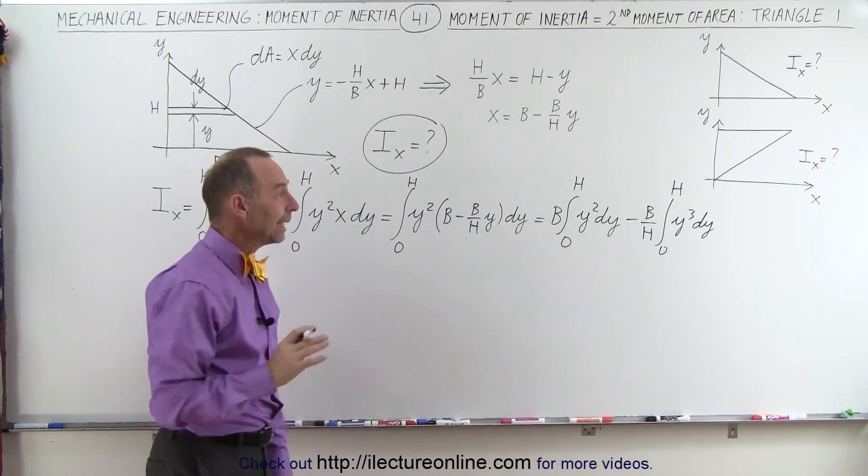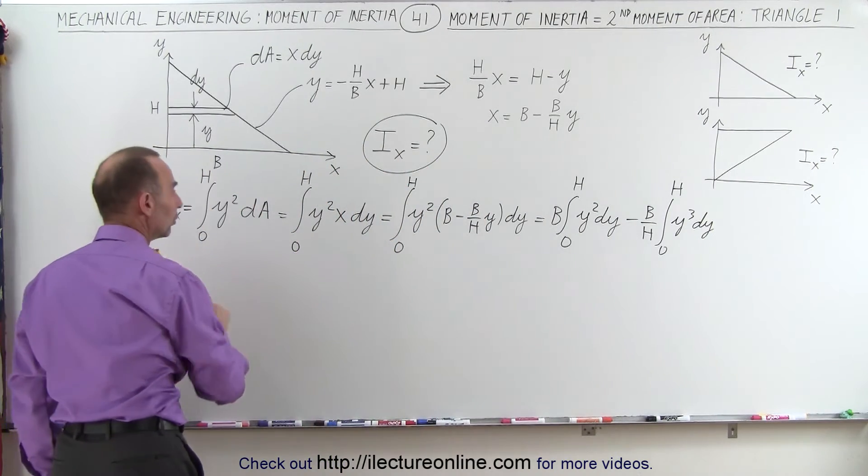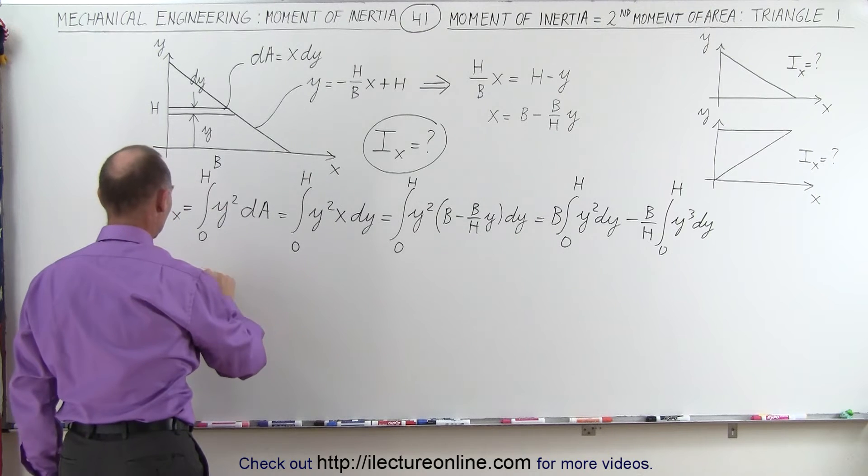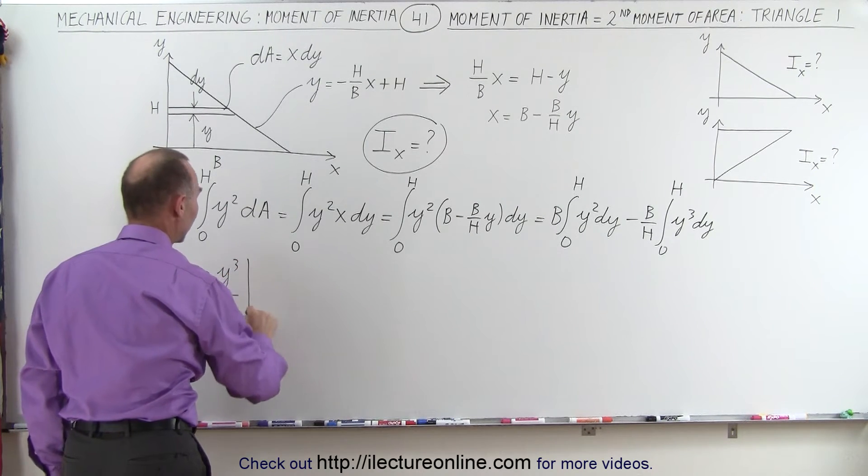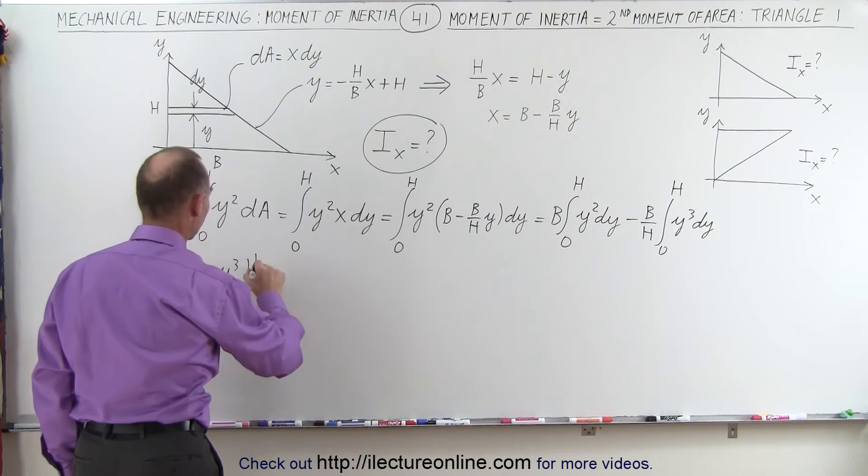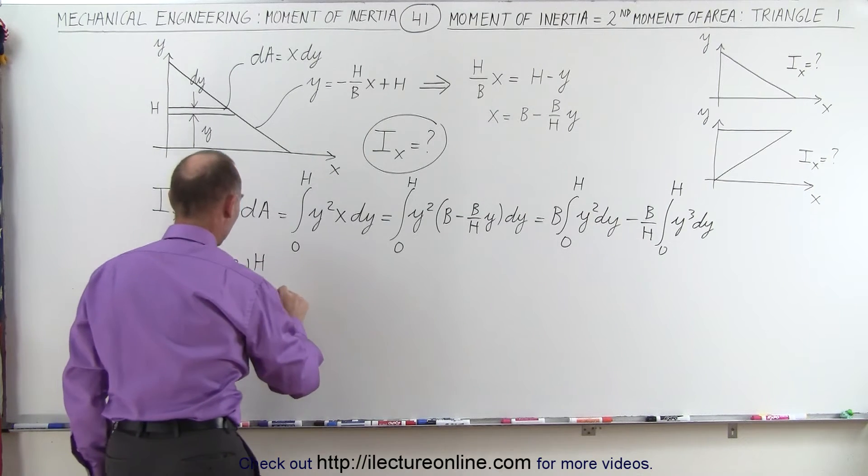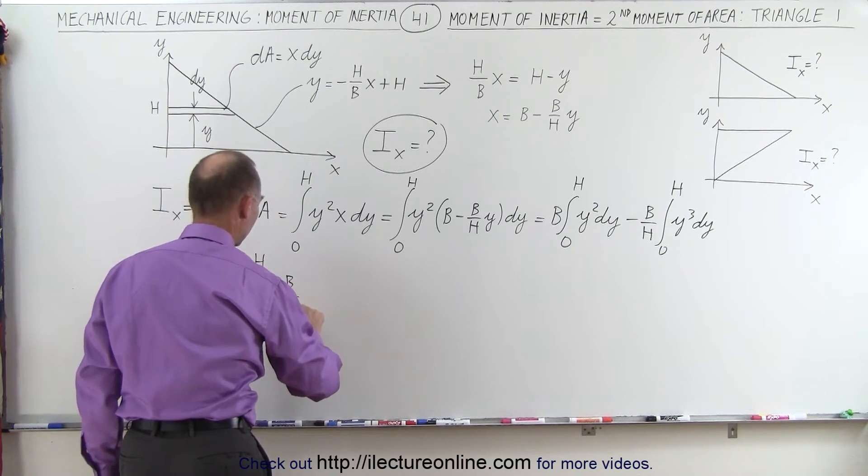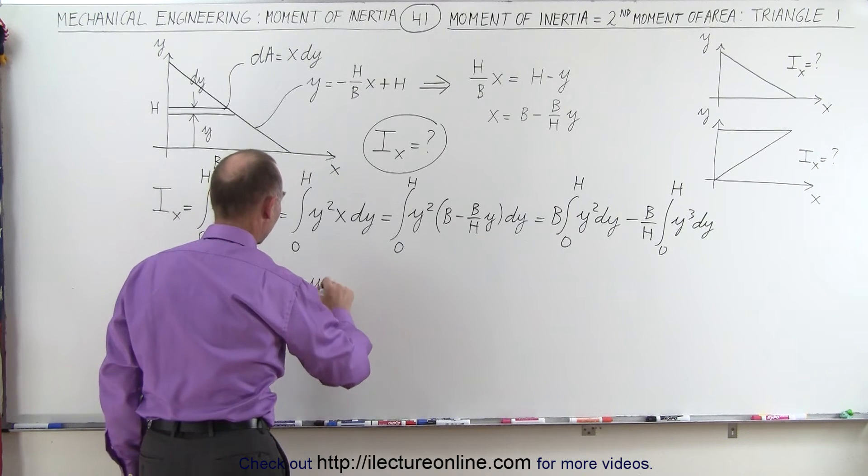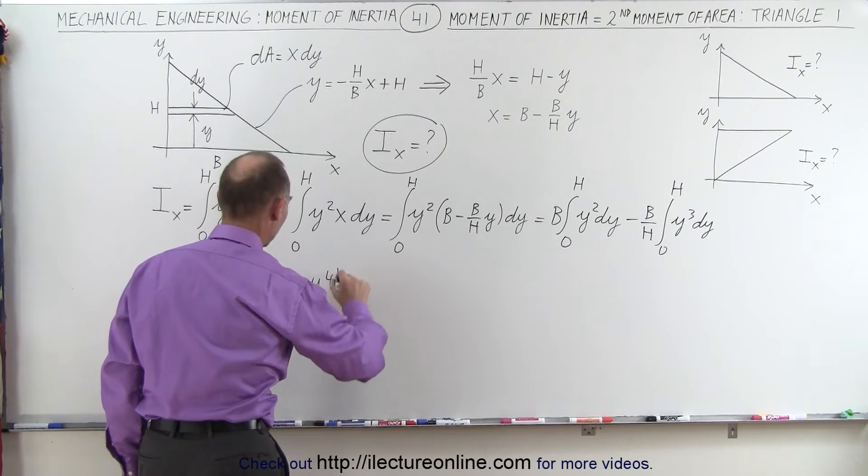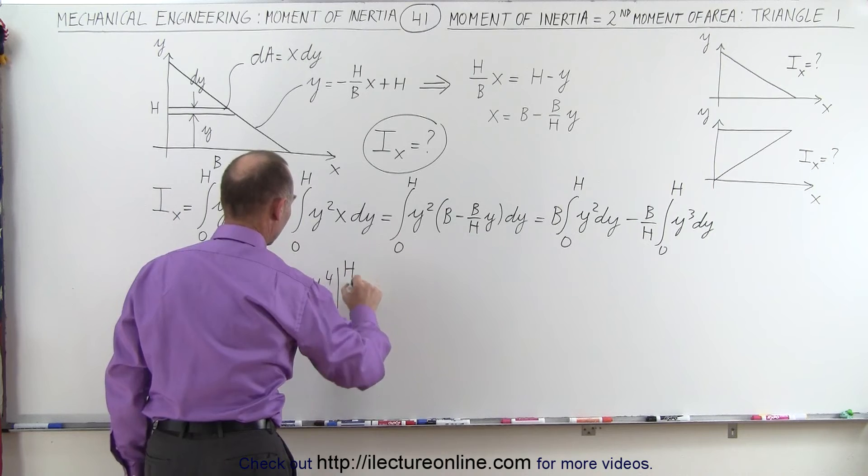So those two integrals can be readily integrated, so this becomes equal to, the first one becomes b times y cubed over 3, evaluated from 0 to h. And the second one becomes minus b over h, times y to the 4th over 4, evaluated from 0 to h.